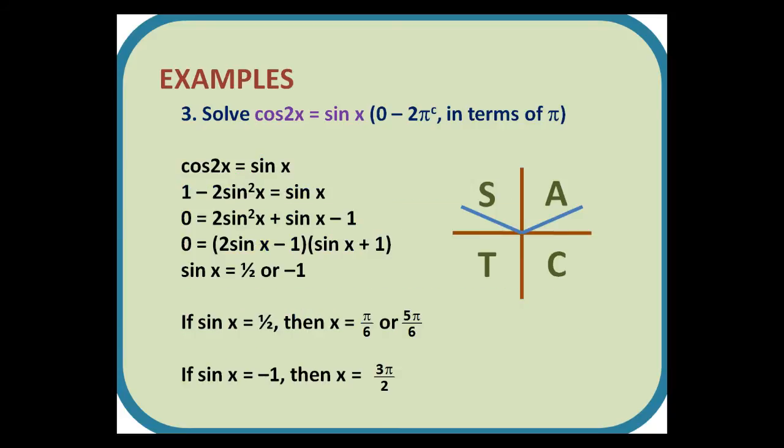So cos 2x = sin x. We replace cos 2x with 1 - 2sin²x, rearrange and factorize, and get sin x = 1/2 or -1. Sin x = 1/2 has two answers of π/6 and 5π/6, and sin x = -1 just has the one answer of 3π/2.